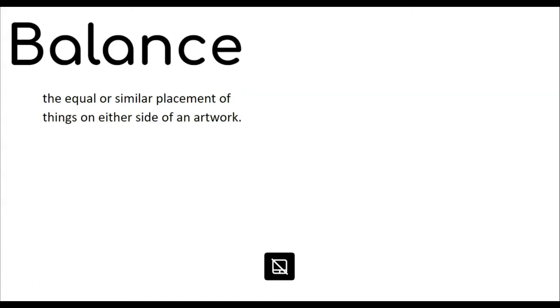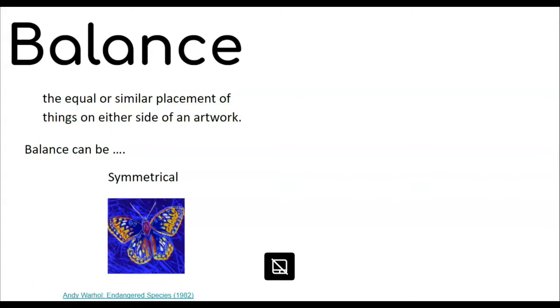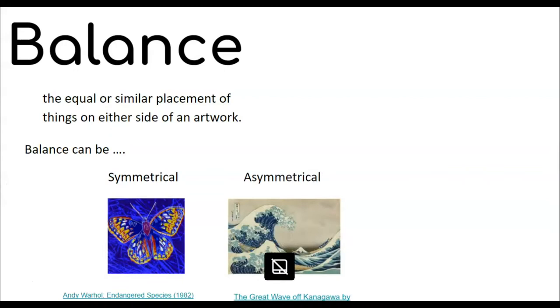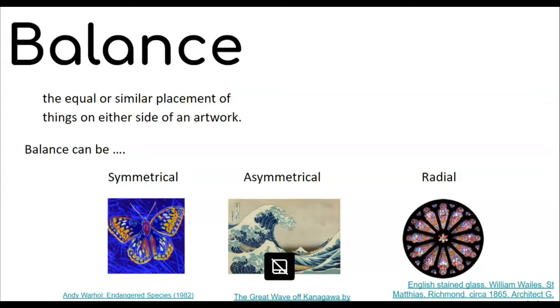Balance is the equal or similar placement of things on either side of an artwork. The type of balance we're talking about is symmetrical balance — when things are exactly the same on the left side and the right side. You can also have asymmetrical balance, where everything is even but not exactly the same on both sides. And then there's radial balance, which is really cool because everything is repeated around the center point — the same on the top, bottom, left, and right. But we are going to focus on symmetrical balance for this project.